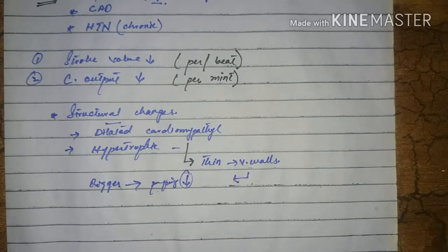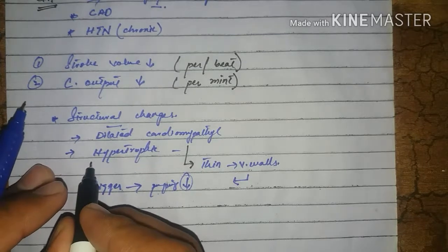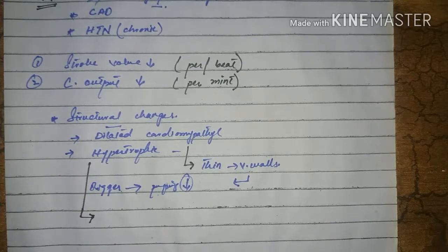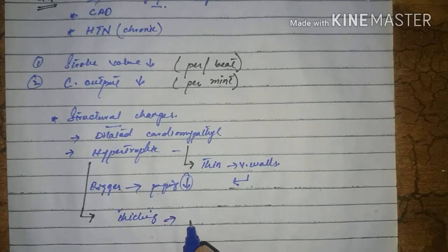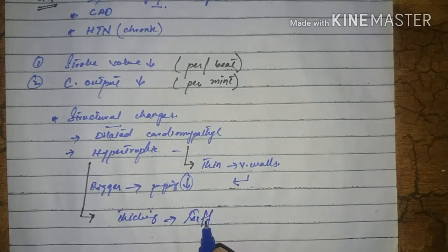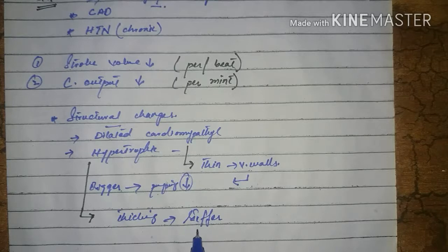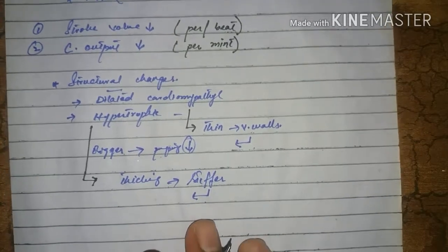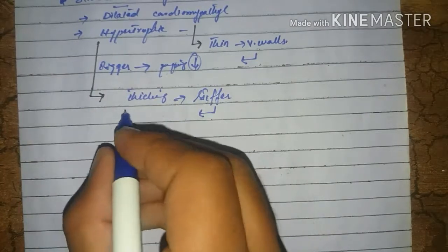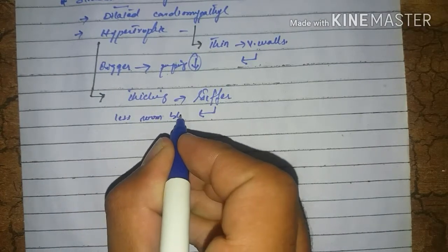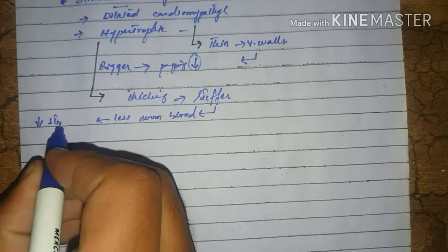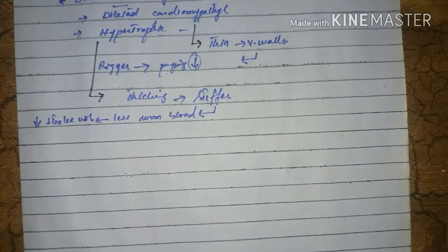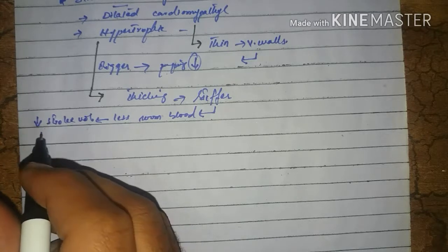The second type is hypertrophic cardiomyopathy. In hypertrophic cardiomyopathy, there is a thickening of the walls of the ventricles, due to which these walls become stiffer, and there is less room for the blood. So automatically stroke volume decreases, and this is a cause of heart failure.